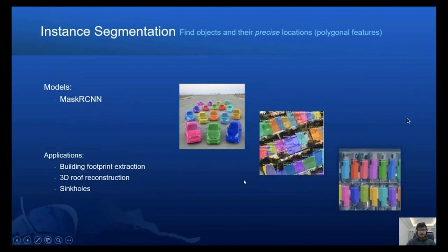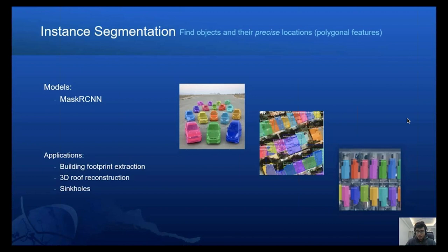Next is instance segmentation. It is a precise form of object detection where we not only detect objects but also detect their precise boundaries. This is done by the very famous Mask-RCNN model. It is very helpful in cases where we have very closely packed buildings and need to identify them separately — unlike pixel classification, which would label them all as a single class. Mask-RCNN enables us to detect different instances of buildings, with use cases like generating 3D roofs, detecting building footprints and sinkholes.